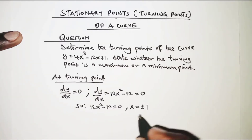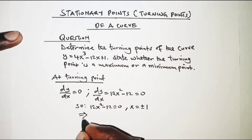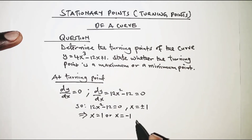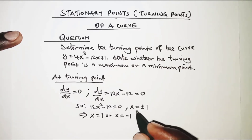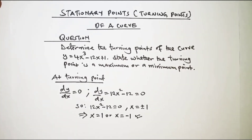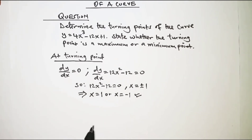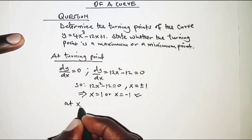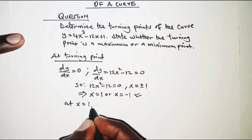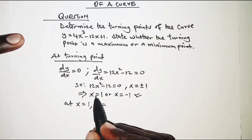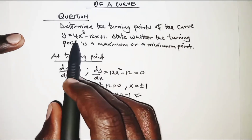This implies x = 1 or x = -1. Therefore, using the values of x we can determine the turning points. At x = 1, we take the value of x and substitute it in the equation of y.